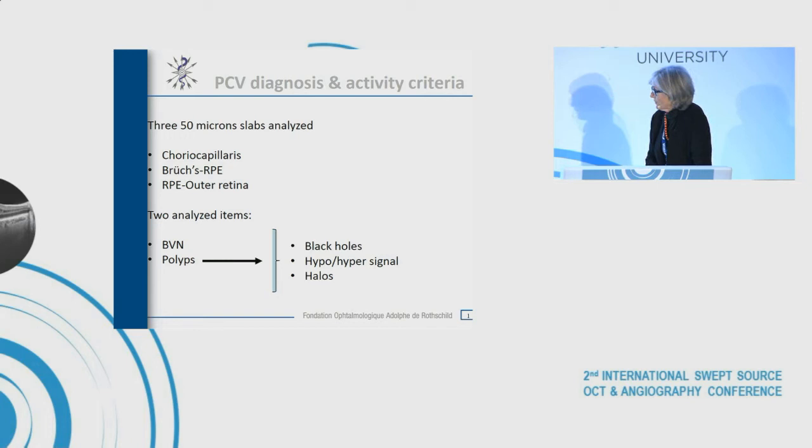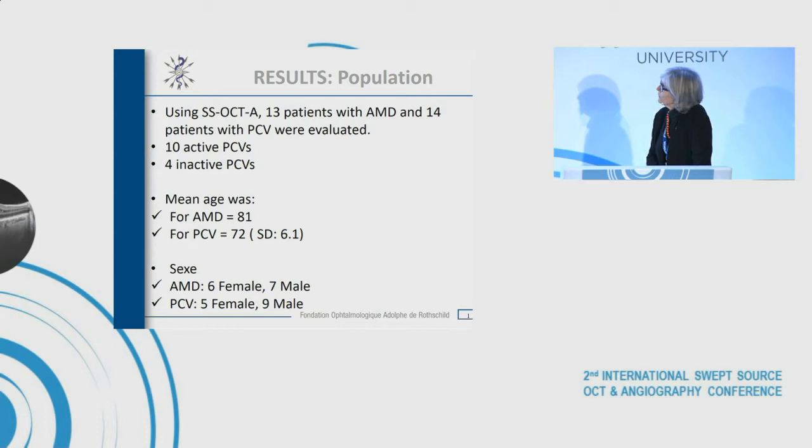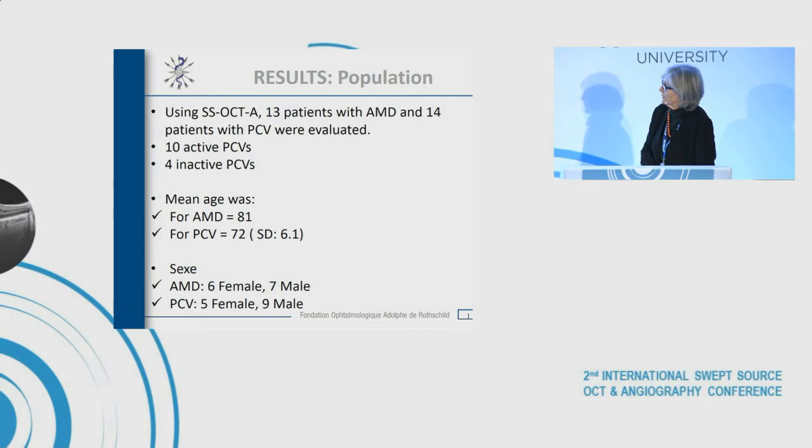In our patient cohort, we had 13 patients with AMD and 14 with PCV — 10 active PCV and 4 inactive PCV. The mean age showed patients were older in AMD, as usual. Sex distribution was predominantly female in AMD and male in PCV. Most of our patients were Caucasian.